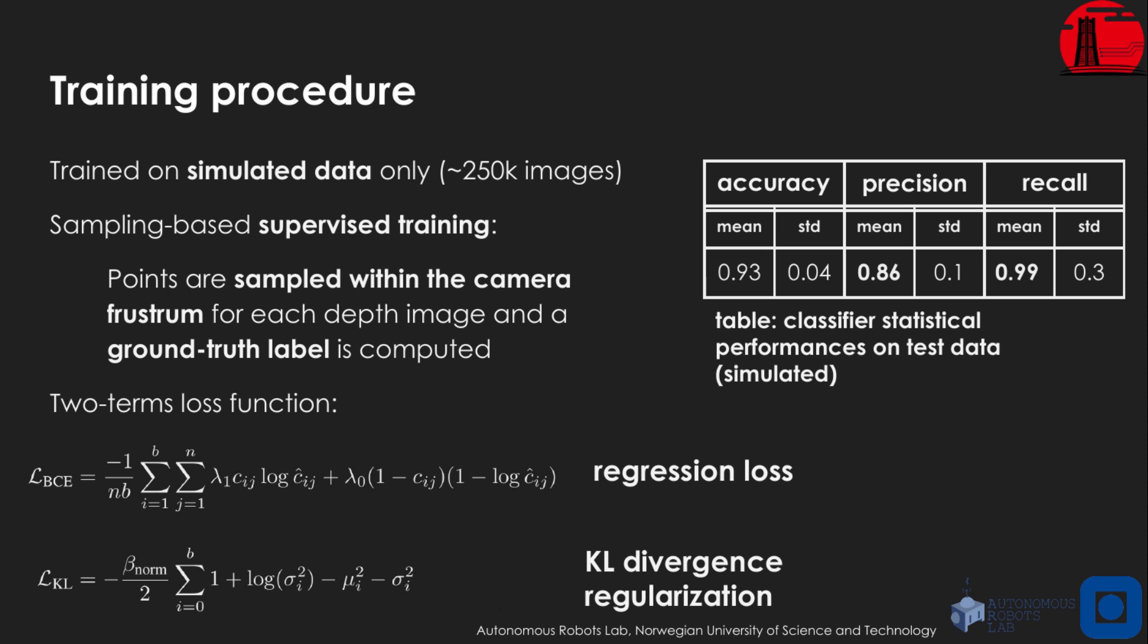The neural network is trained on simulated data on a dataset collecting 250k images. The training is fully supervised and is done in a sampling-based fashion. At each epoch, a given number of points are sampled within the frustum of the camera for each depth image and a ground-truth label is computing using an algorithmic procedure.